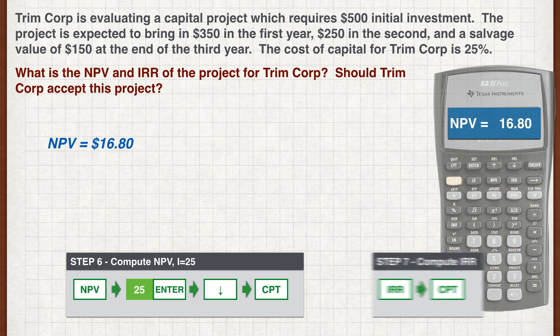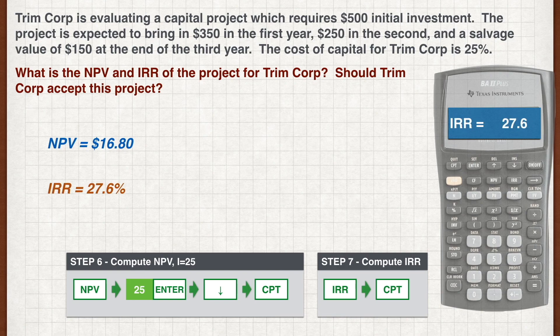To compute the internal rate of return, simply hit the IRR button and press compute after that. The calculator automatically calculates the IRR and presents the figure of 27.6% to you. You have calculated the NPV and IRR in just a few steps. Admittedly, these functions on the calculator are not so intuitive. You may want to spend some time to practice doing such problems to familiarise yourself with the calculator.